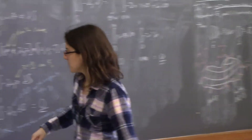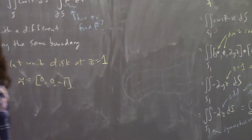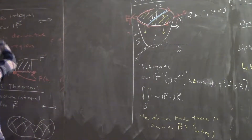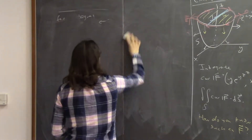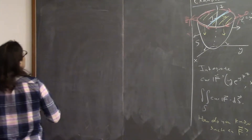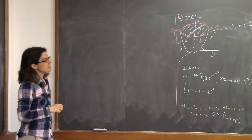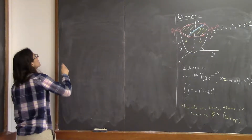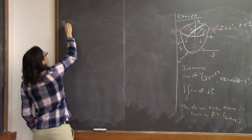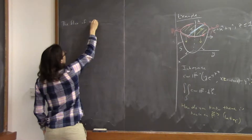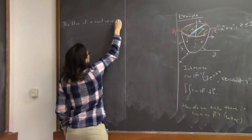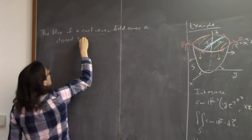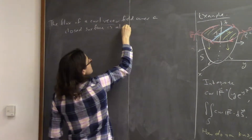There are some cool things we can deduce from Gauss's theorem. One thing is that the vector surface integral of a curl vector field over a closed surface is always zero. In other words, the flux of a curl vector field over a closed surface is always zero.